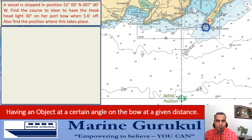In most chartwork questions, we are able to plot the data on the chart and get the answer. But in this question, we are not able to plot any further as the course to steer is not known to us. So how do we proceed? As discussed earlier, we make a rough diagram on our answer script. Let us make it here on the screen.